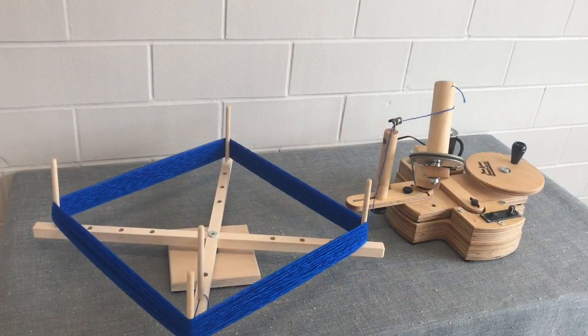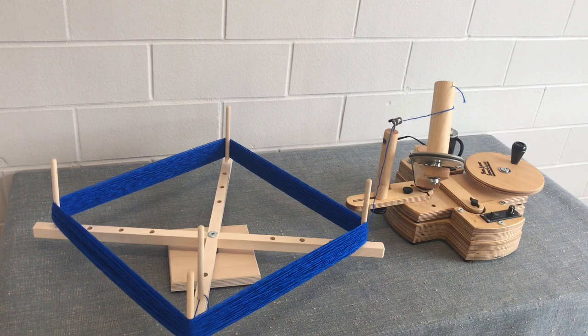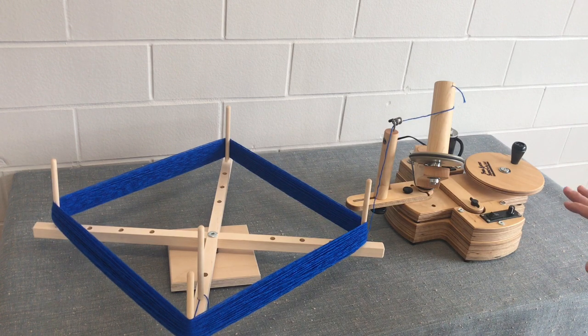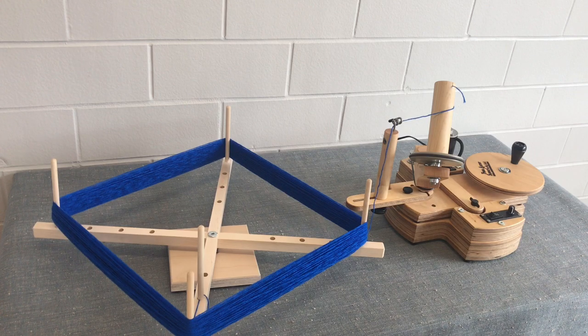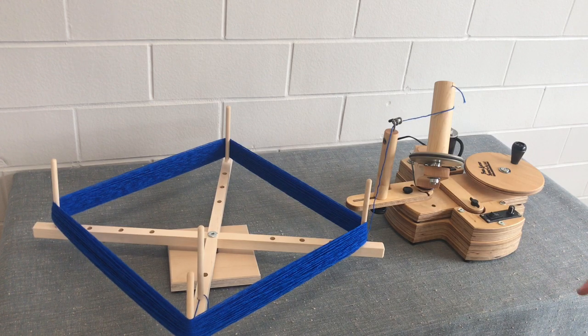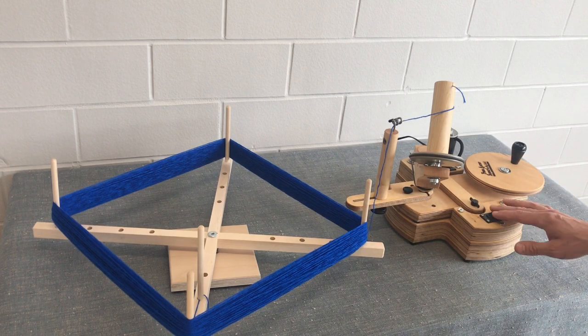We've now got our yarn hooked up to the jumbo ballwinder and we're ready to start winding our yarn. So the way in which you operate this unit is really a personal preference. I've used it fast, I've used it slow, I've used the switch more and the knob less, I've used the knob more and the switch less.